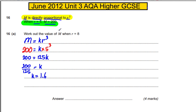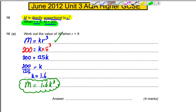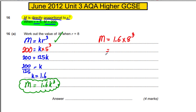Now rewrite this equation with the K found. Therefore our formula for M is equal to 1.6 times R cubed. That is the formula relating M and R cubed. The actual question asks us to work out M when R is 8, so therefore M must be 1.6 times 8 cubed. Tapping into your calculator again: 1.6 multiplied by 8 to the power of 3. And you get yourself 819.2.